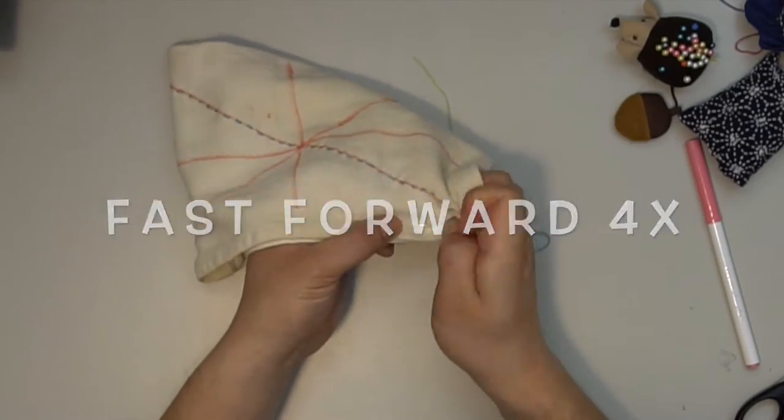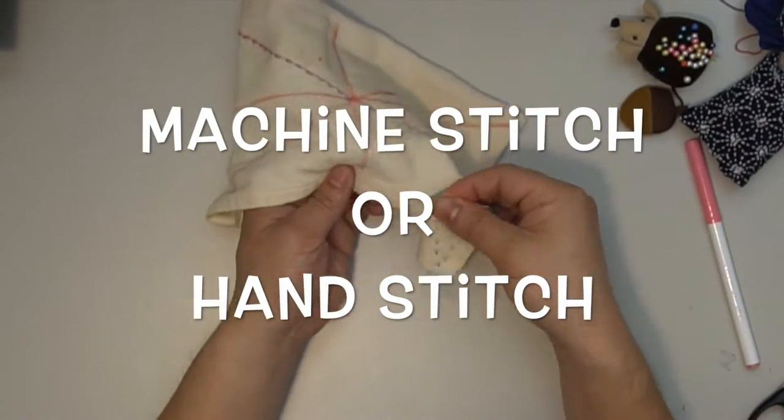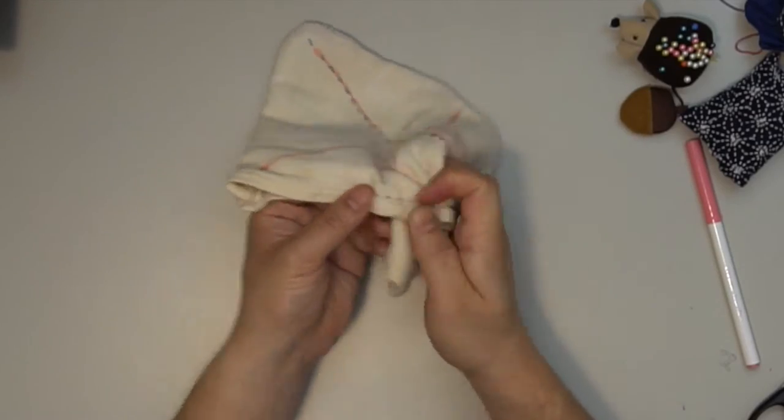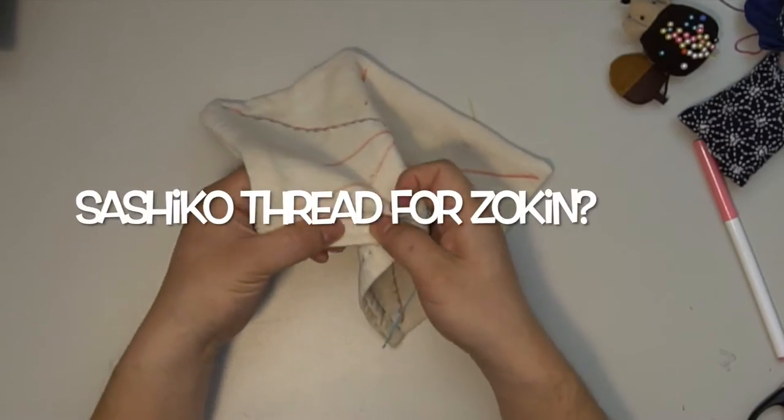Two main questions about making Zoukin would be: Does it have to be hand stitched? And do we use sashiko thread in making Zoukin?